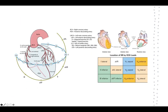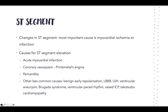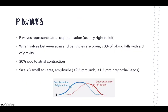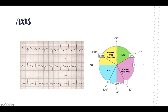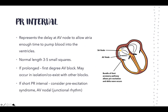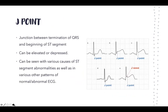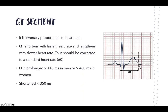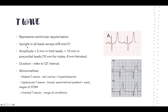AVR points in the opposite direction of lead two, so many signals appear inverse. It's important to know that T waves are upright in most leads except AVR and V1 — don't be alarmed if they're negative in those two. Amplitude is expected to be less than 5 millimeters in limb leads and less than 10 millimeters in precordial leads, with slight male-to-female variation.